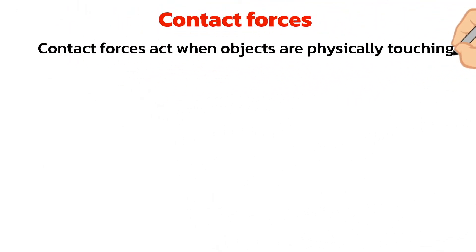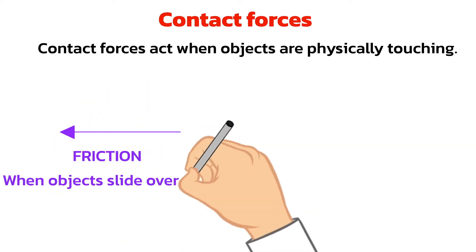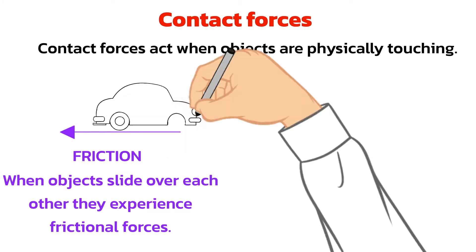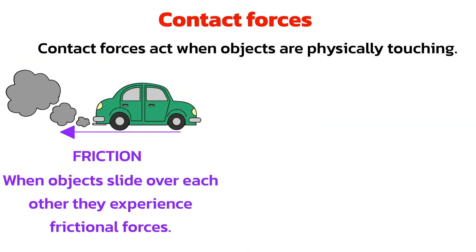Contact forces are those that act only when objects are physically touching. Friction acts when objects move over each other. In this example, when a car moves along a road, the surfaces of the tires and road are in contact and so they experience frictional forces.